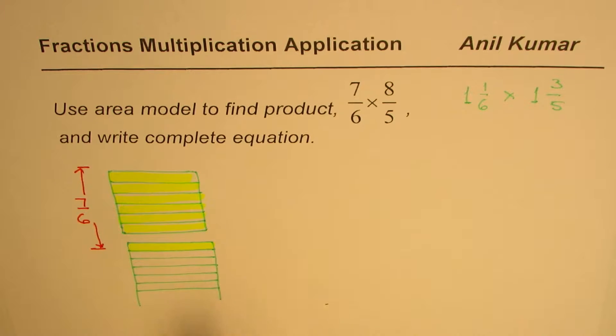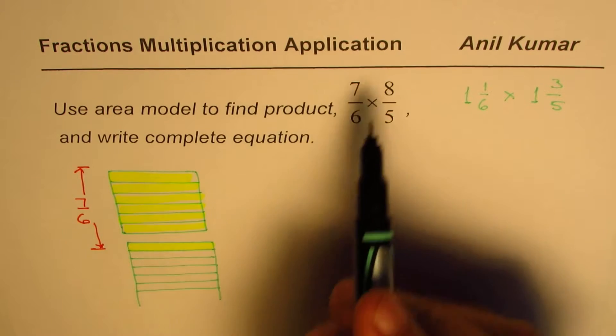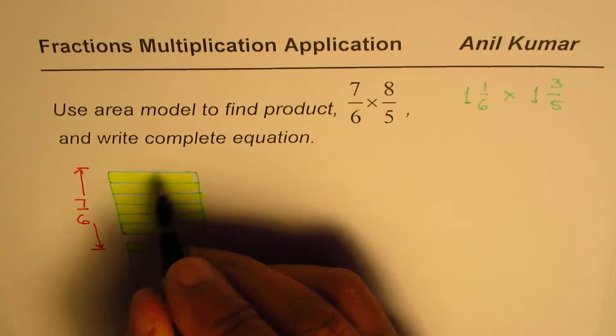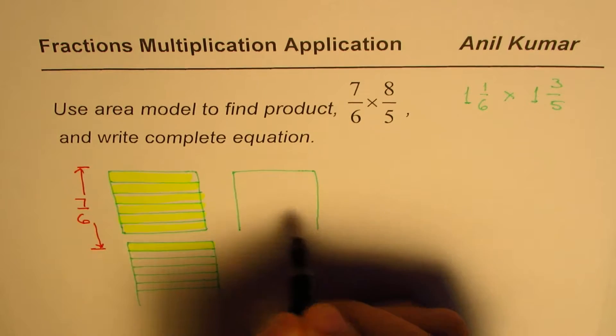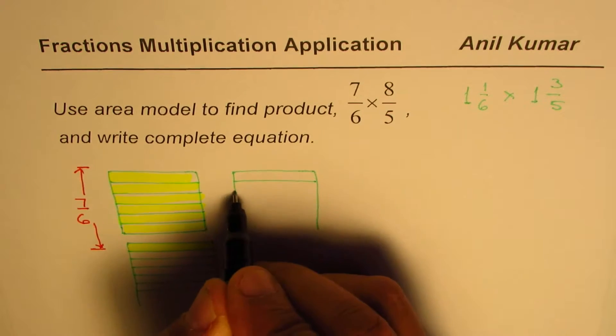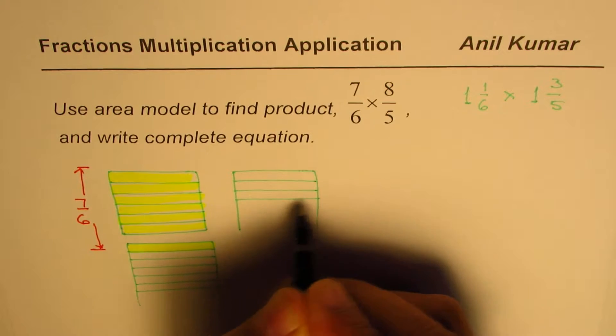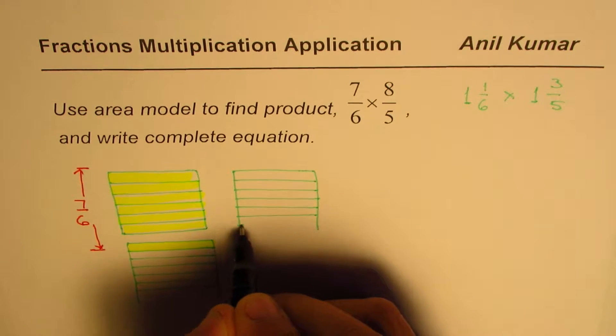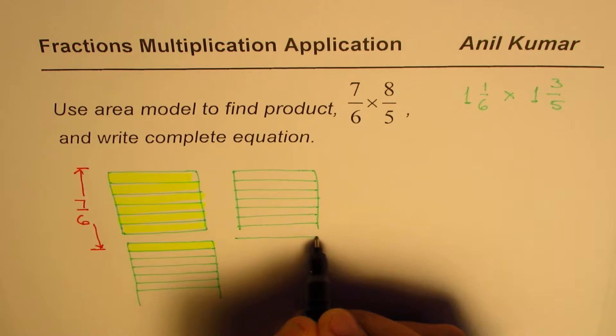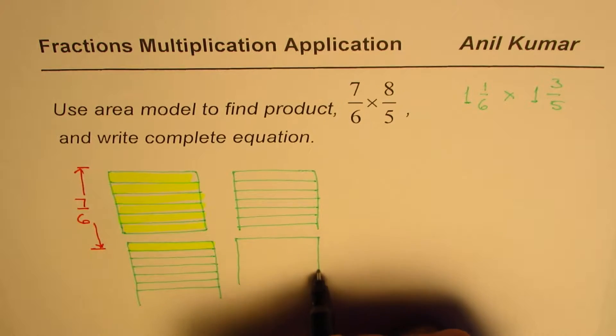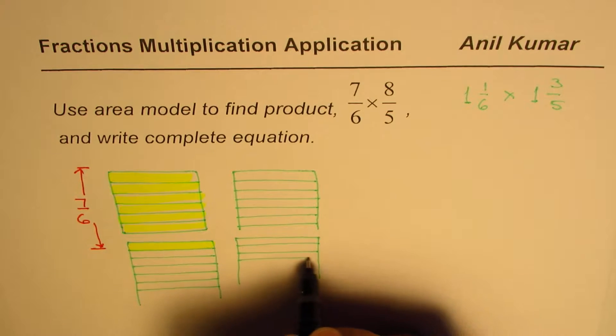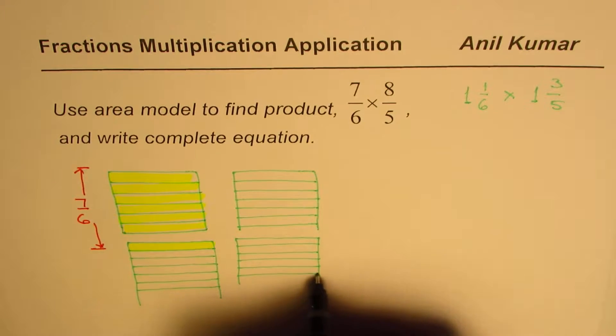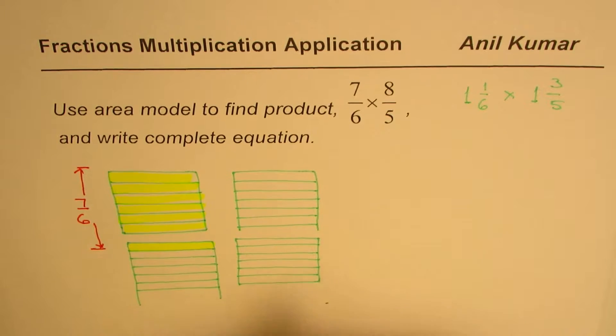Now we need to multiply this by 8/5. So we will divide that into columns. Let's copy these. So again we will make another set of this. 1, 2, 3, 4, 5, and 6. First box. The second one here will be 1, 2, 3, 4, 5, and 6. Correct.